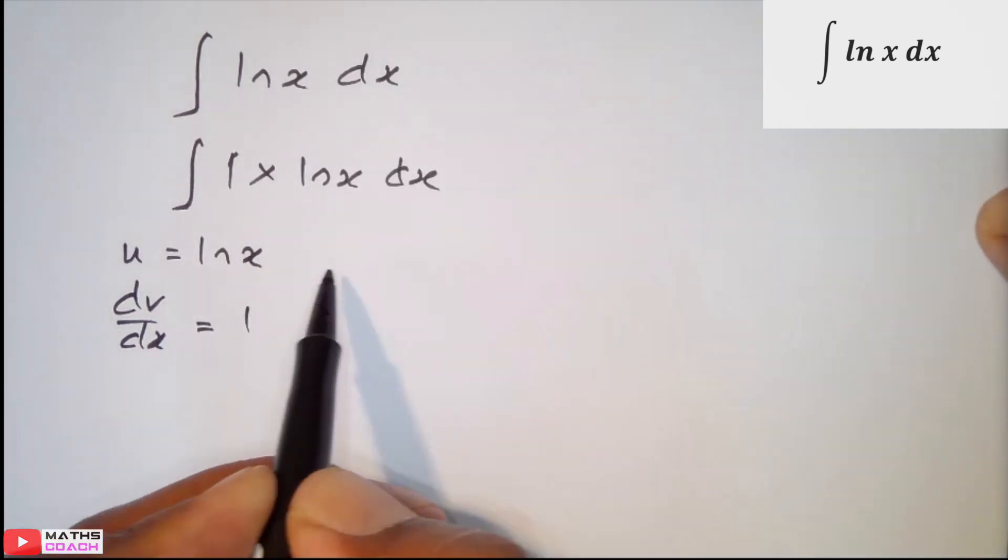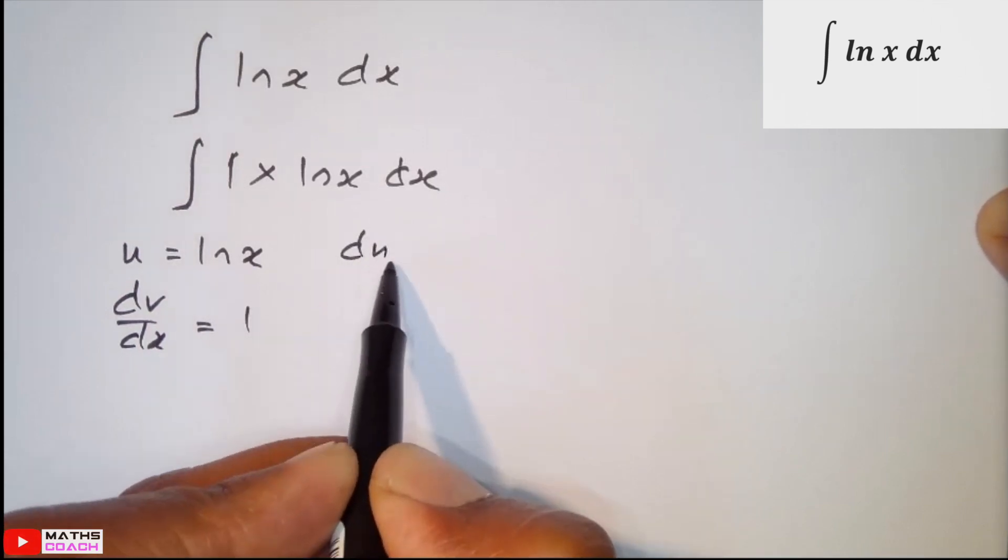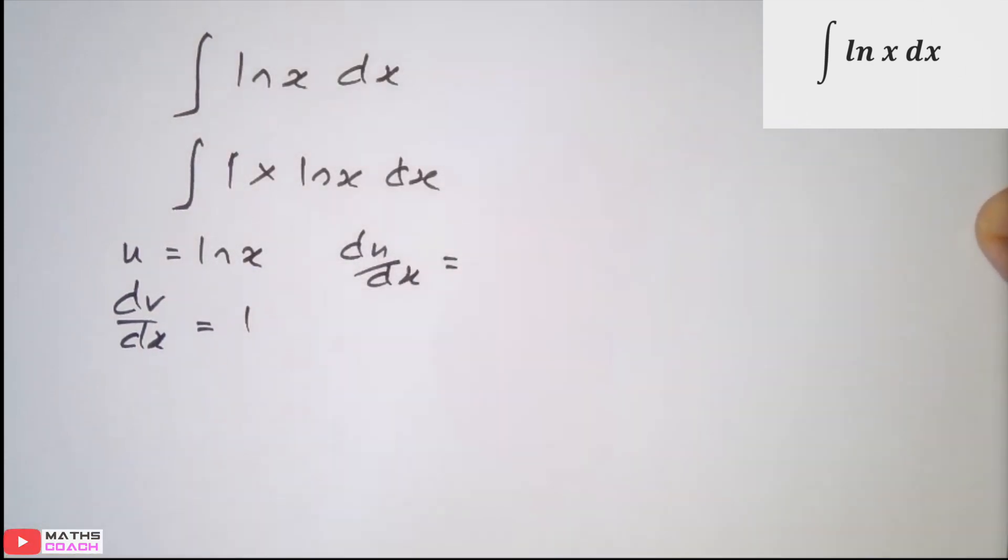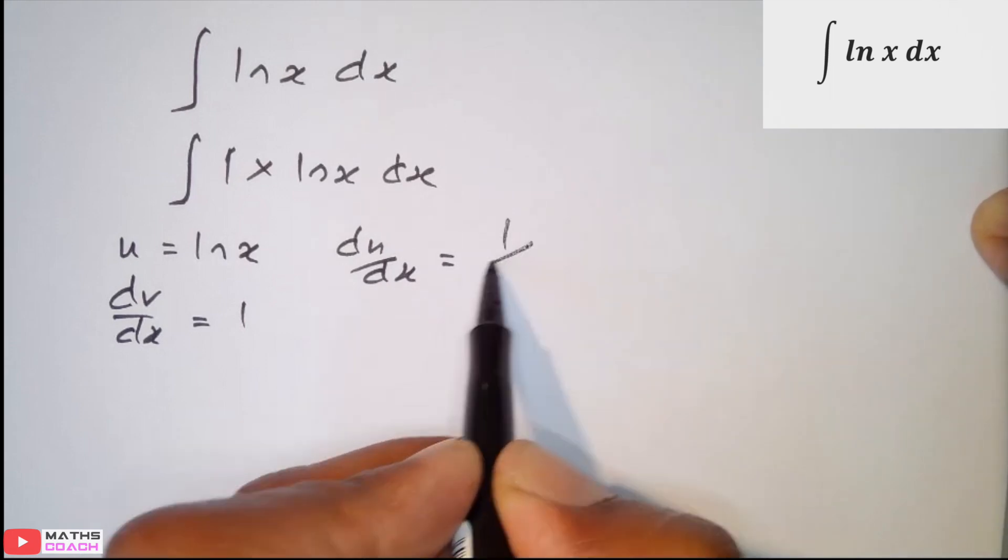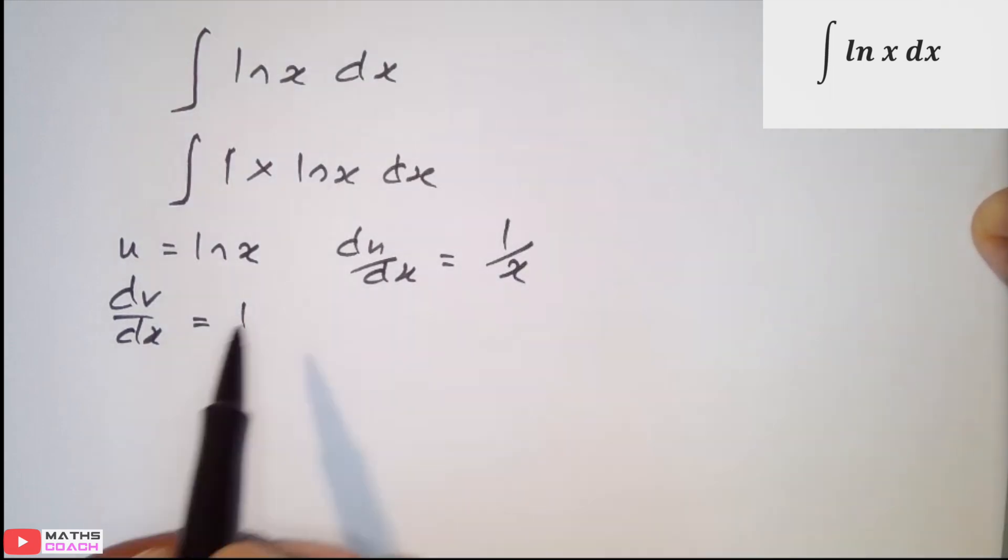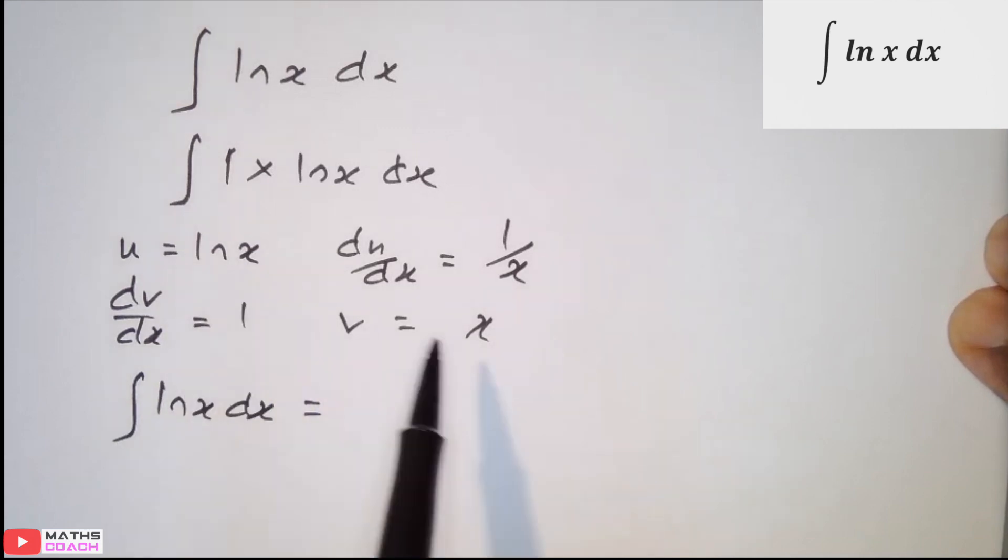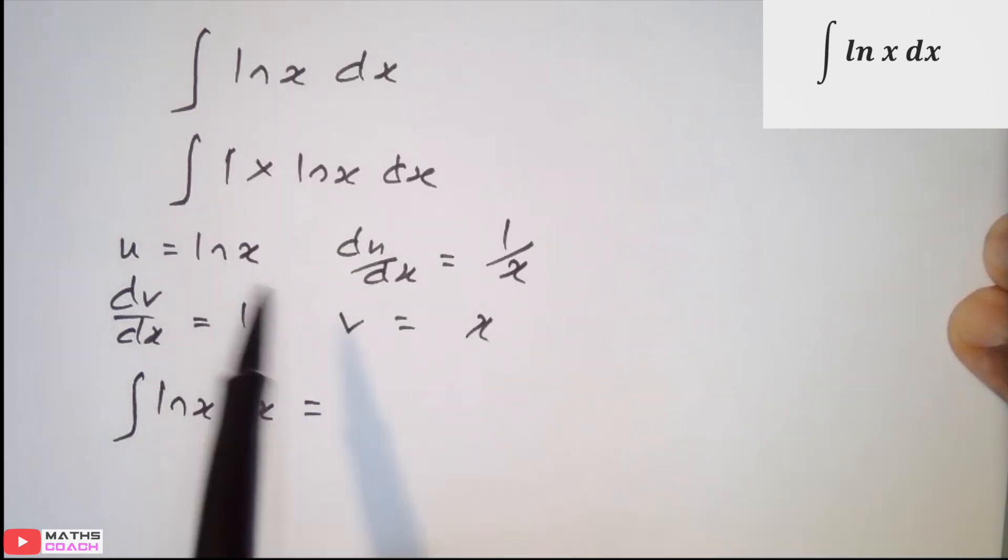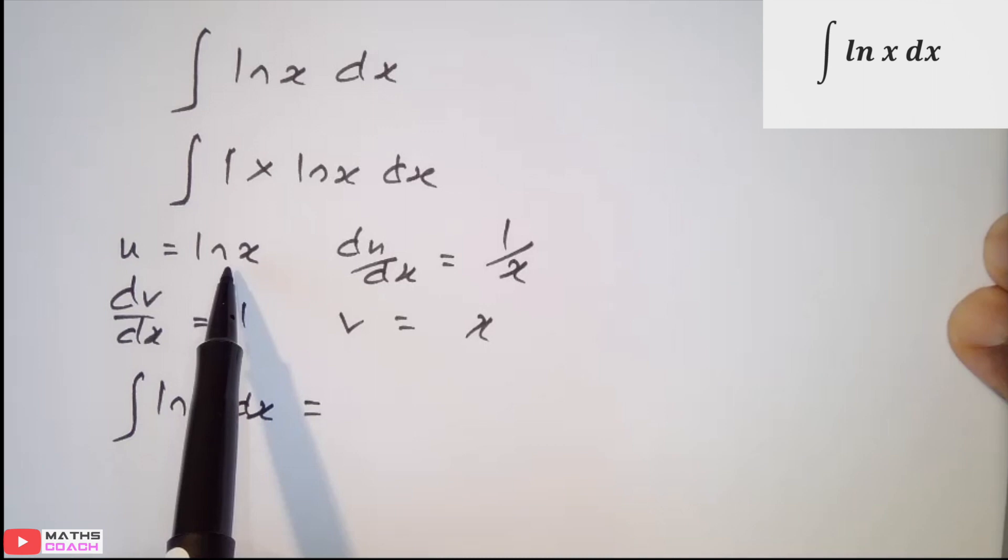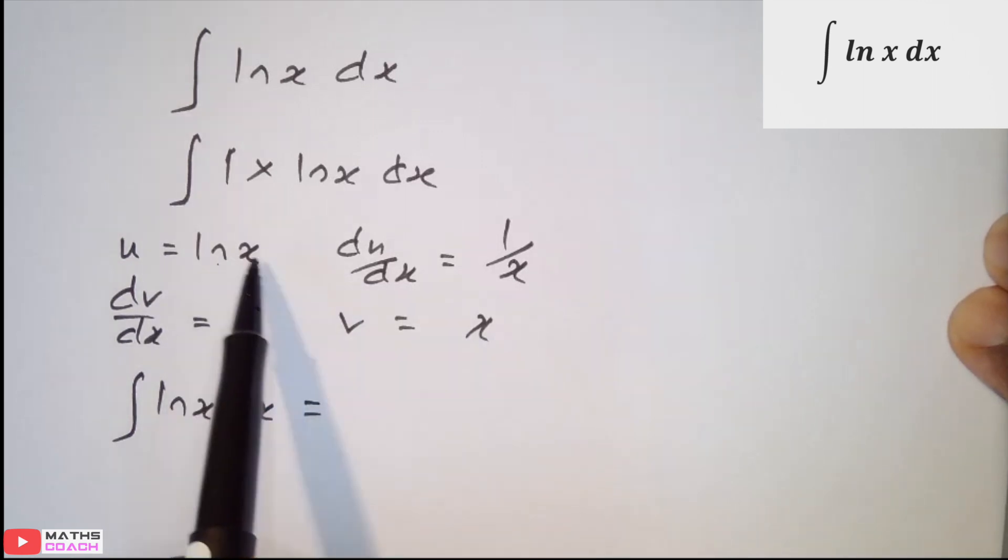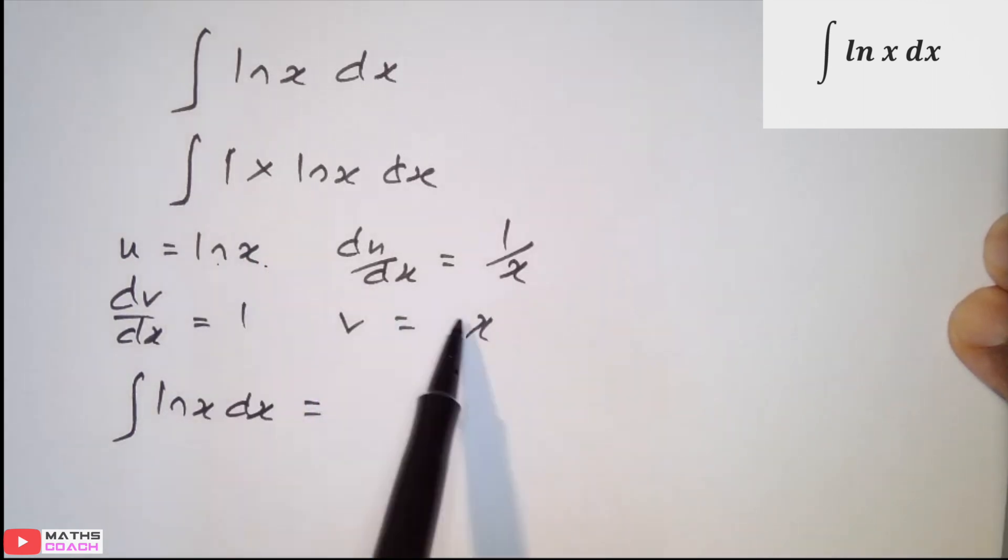So, we now need to differentiate du/dx as normal. So, du/dx would equal to 1 over x. And v, in other words, integrate our constant 1, we get x. So, integration of ln x with respect to x equals uv ln x times x. Now, mistakes are made when some students have written ln x with x as ln x squared. Never do that. You cannot mix up that x with that x.